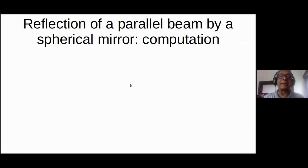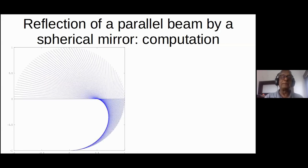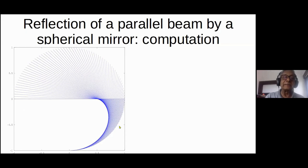If you try this by computer — reflection from a spherical mirror of a parallel beam — we have all been taught that rays focus at half the center of curvature, but we really cheated you when we told you that in class. Here's a better sketch. The mirror is a semicircle like this — a hemisphere in three dimensions. The incident rays are all parallel.